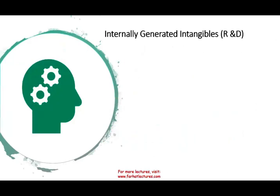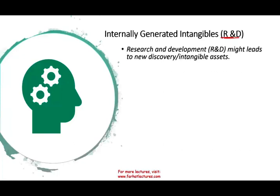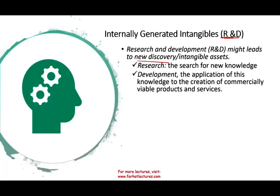Let's talk about internally generated goodwill — really, this is about how we treat research and development, or R&D. When a company creates a new patent, they go through a lot of internal work and R&D until they come up with a new discovery considered an intangible asset. Research is the search for new knowledge. Development is when you take that knowledge and apply it into a commercially viable product. So R&D usually leads to some sort of an intangible.